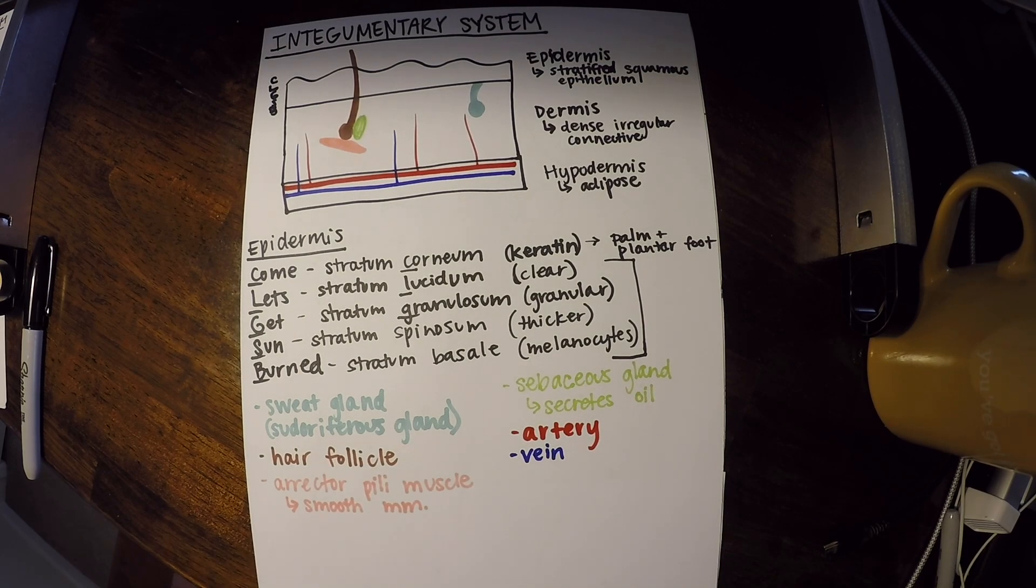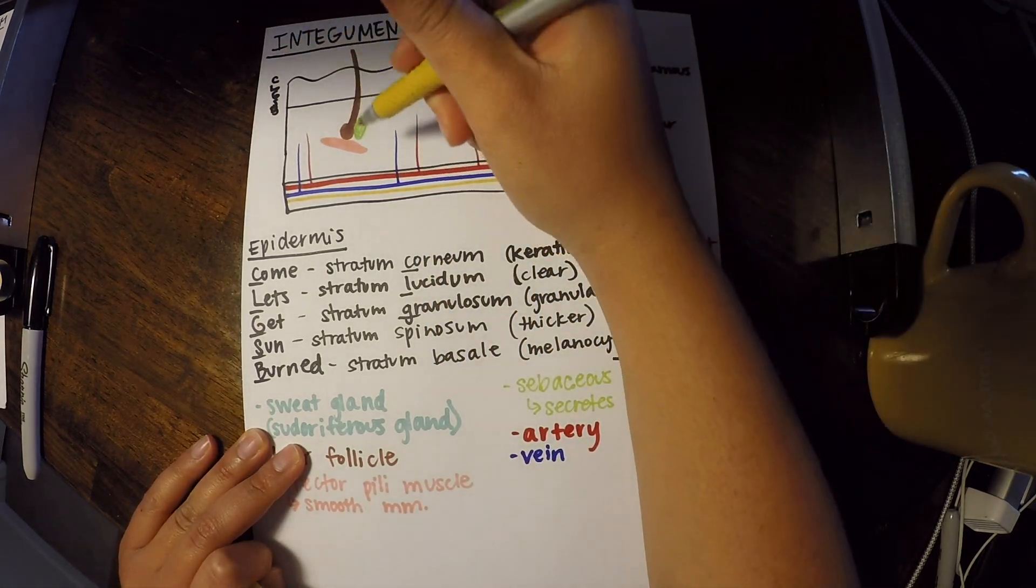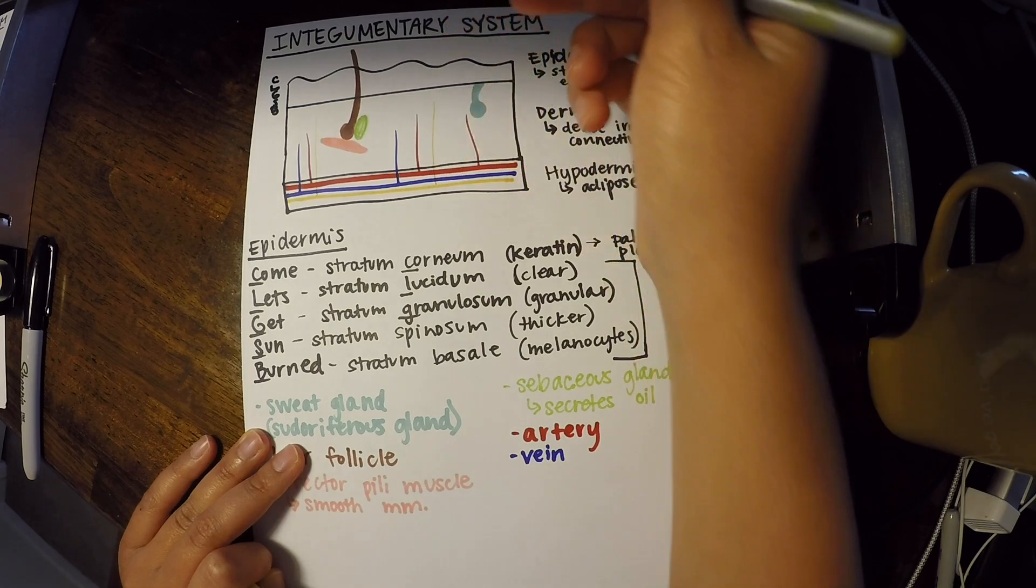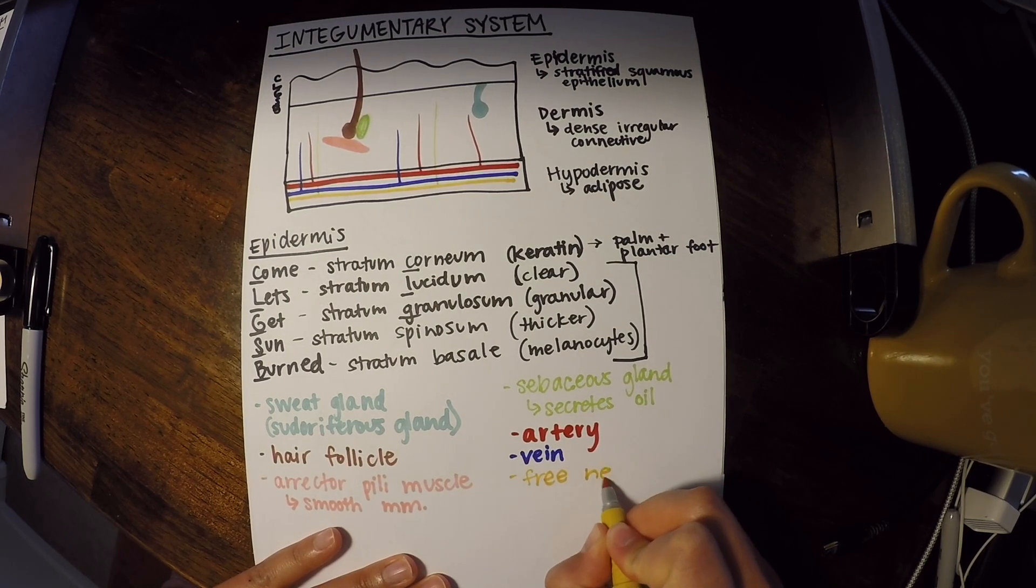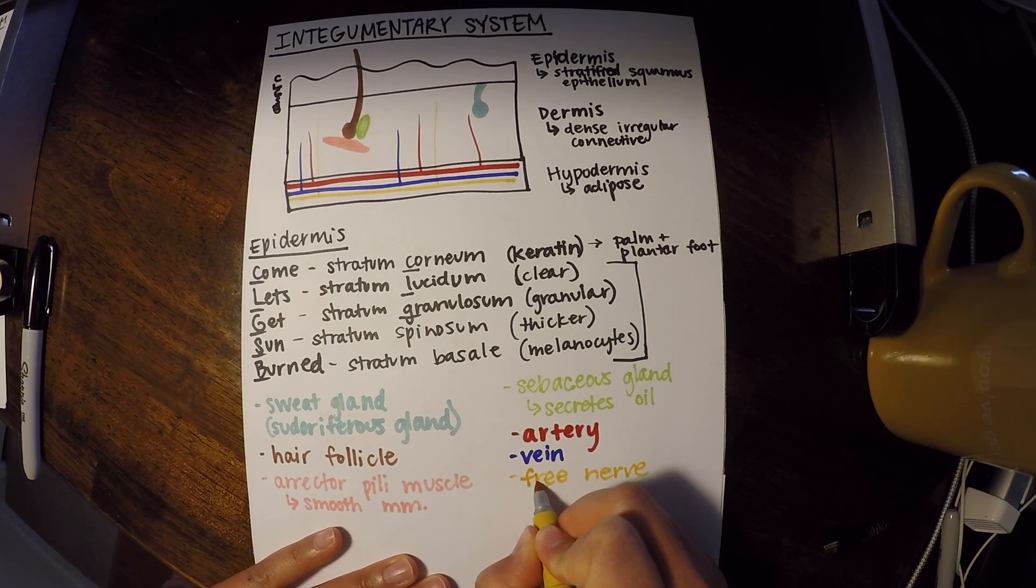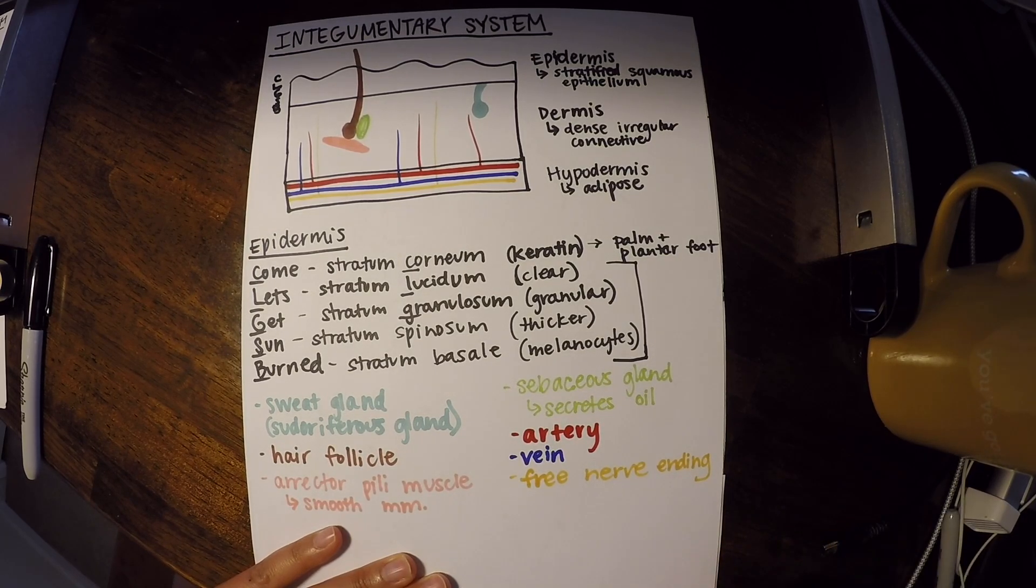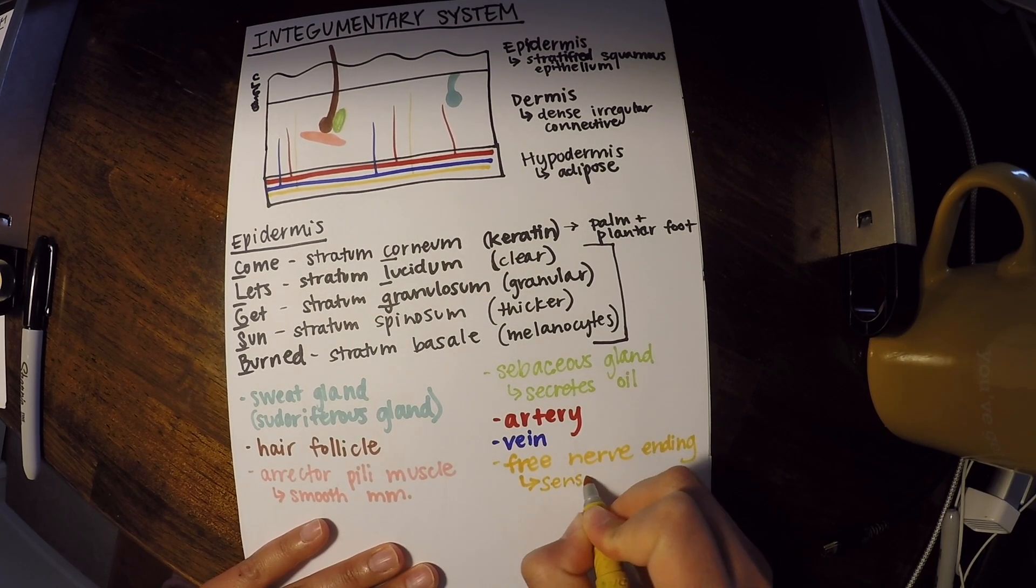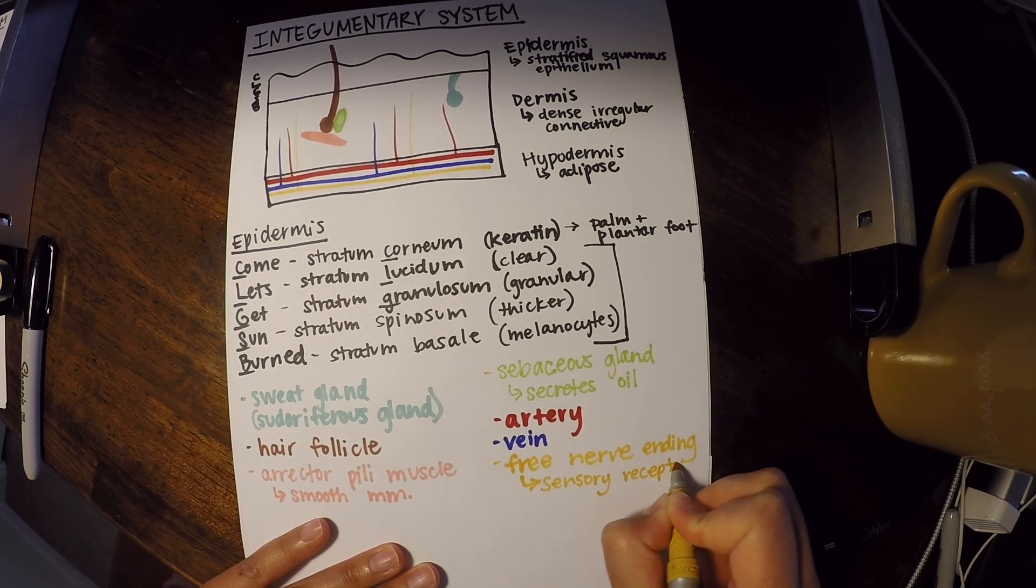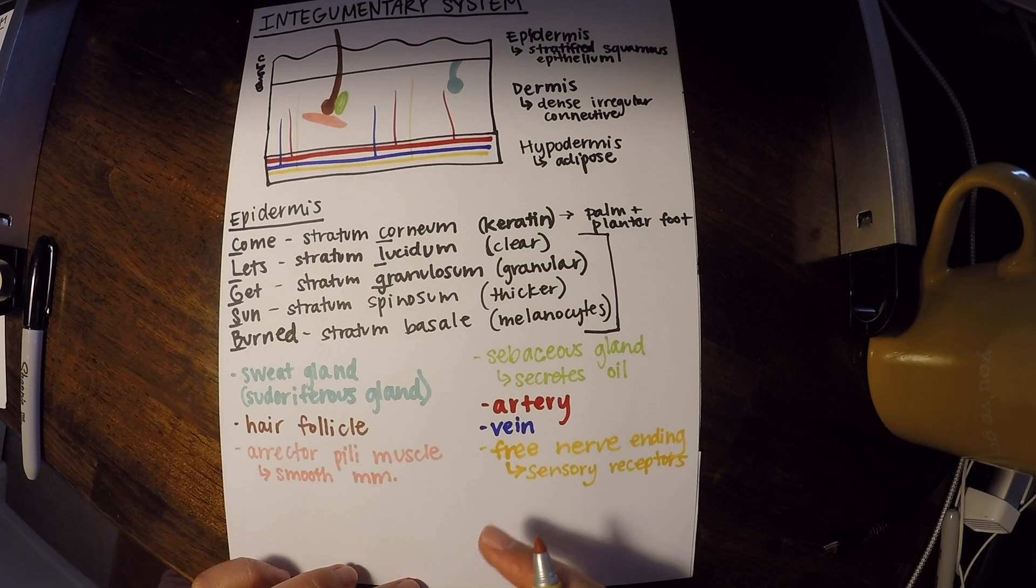So we're going to have arteries in red. And I'm going to have some of them coming up into the dermis. We're going to have veins, which I'm going to draw in blue. And that's also going to come up into the dermis. And then we're also going to have a nerve. And they're actually going to have, it's going to be free nerve endings that are coming up into the dermis, which are really just our sensory receptors. So a free nerve ending. And then I'm just making a note that they're sensory receptors. Now remember, in the future as we go on, we're always going to draw the arteries in red, veins in blue, and nerves in yellow, whenever those colors are available.